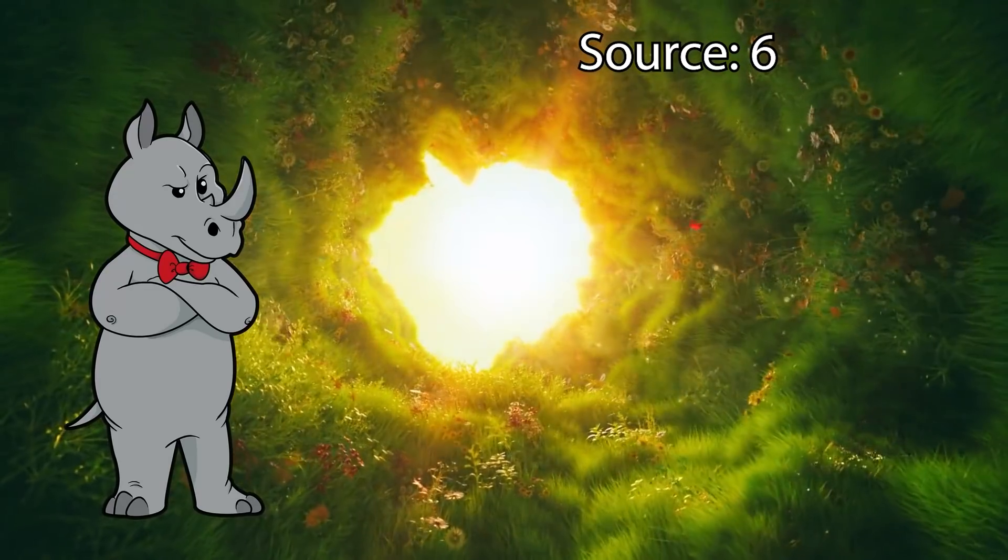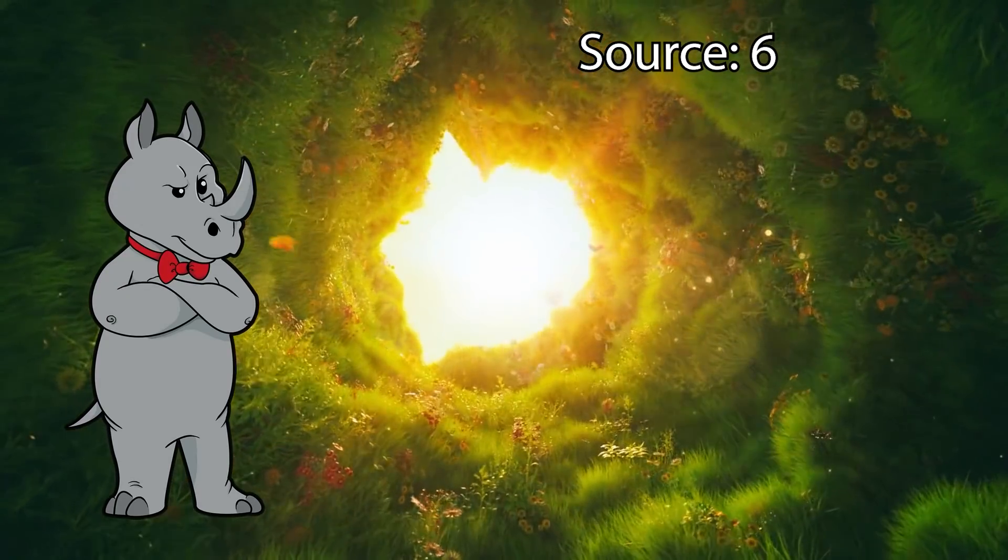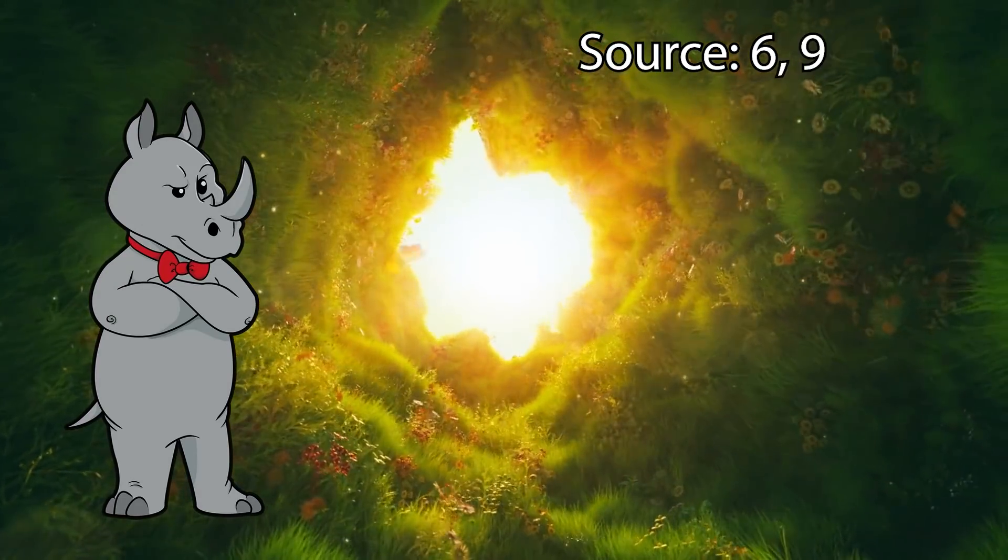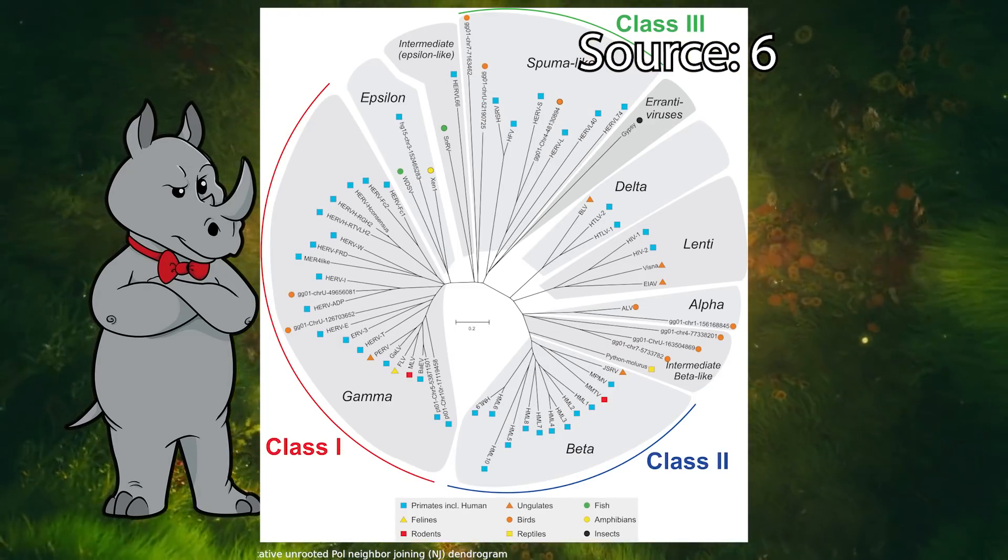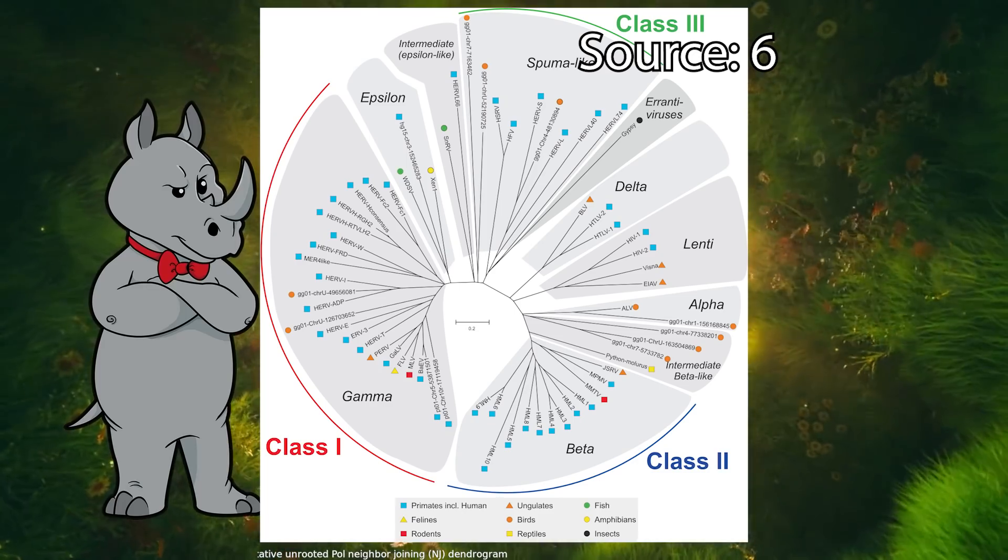With each ERV, there are three individual data points that can be used to construct an independent phylogeny. First, there is just the general distribution of ERVs as a whole among the different taxa, which provides the overall timeline.